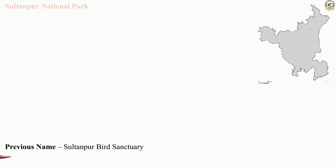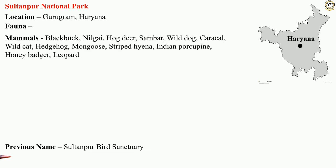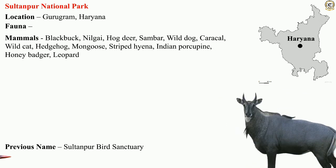Previously known as the Sultanpur Bird Sanctuary, the Sultanpur National Park is located in Gurugram, Haryana. The national park has mammals as well as resident avian birds and migratory avian birds. The mammals found in Sultanpur National Park include blackbuck, nilgai, hog deer, sambar, wild dog, caracal, wild cat, hedgehog, mongoose, striped hyena, Indian porcupine, and honey badger.